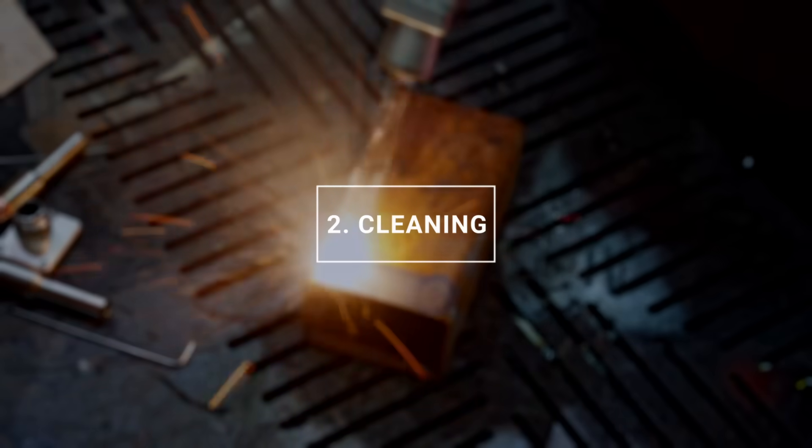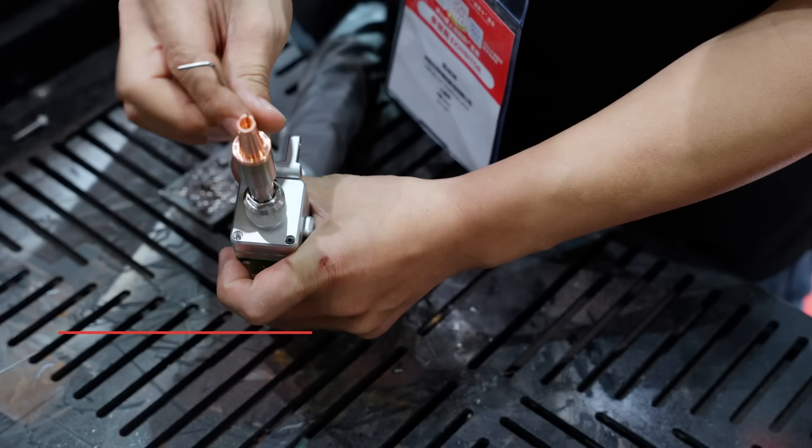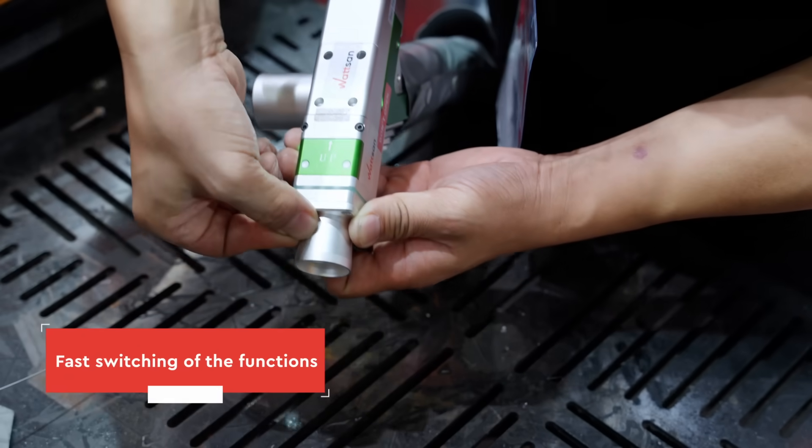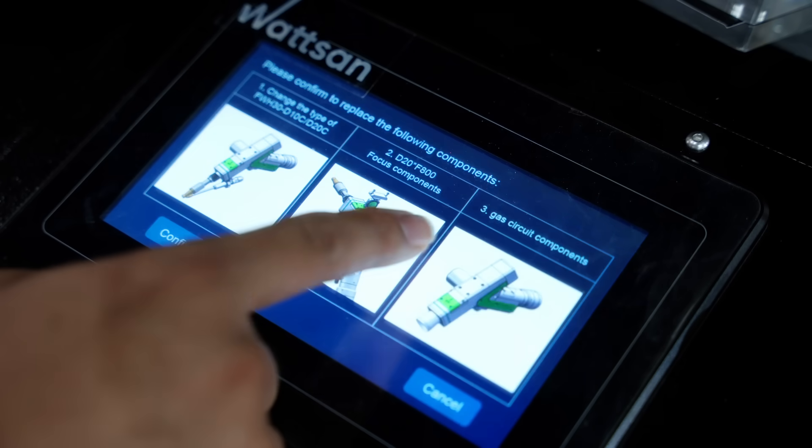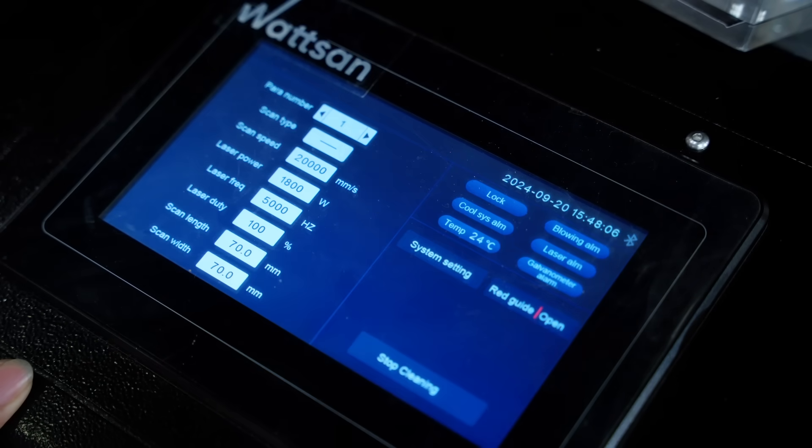Second, cleaning. To switch between functions, change the lens and welding module to the cleaning module. Then choose the working type you want in the manual, and you will have a working cleaning mode.